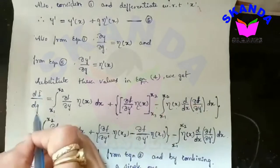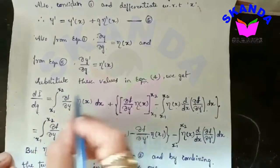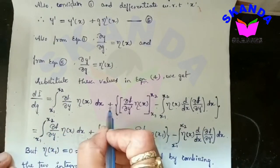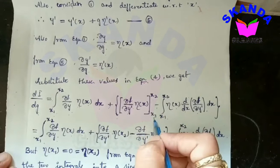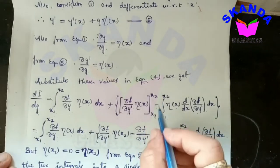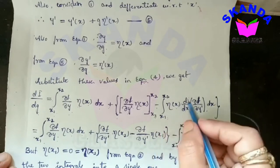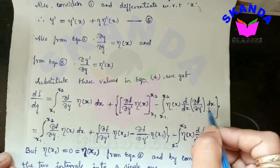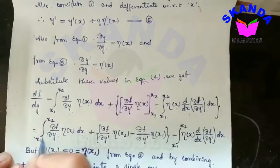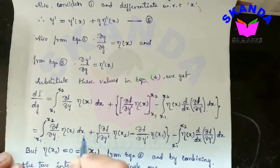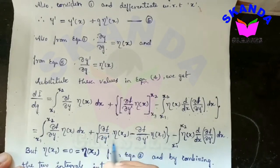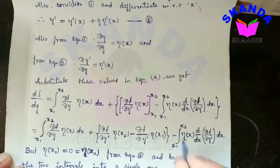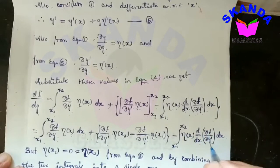We get di/dg equals the integral from x1 to x2 of [∂f/∂y · η(x) + ∂f/∂y' · η'(x)] dx. Integrating the second term by parts, we get: [∂f/∂y' · η(x)] from x1 to x2 minus the integral from x1 to x2 of η(x) · d/dx(∂f/∂y') dx. Substituting the upper and lower limits: ∂f/∂y' · η(x2) minus ∂f/∂y' · η(x1) minus the integral from x1 to x2 of η(x) · d/dx(∂f/∂y') dx.